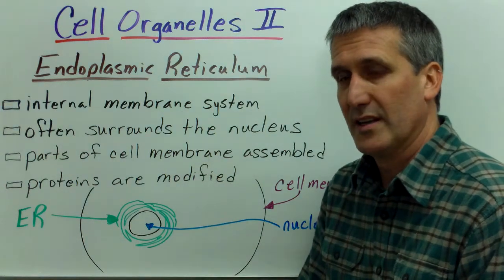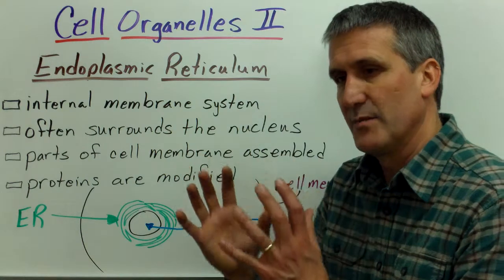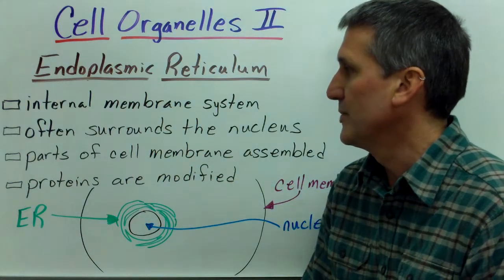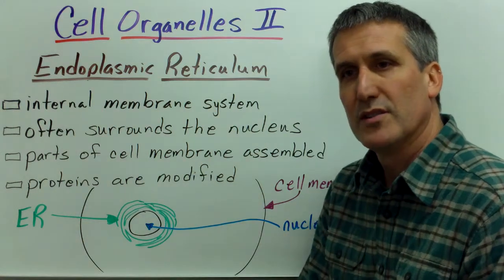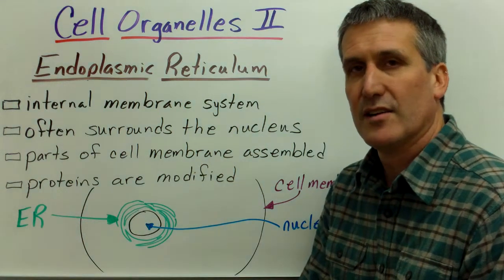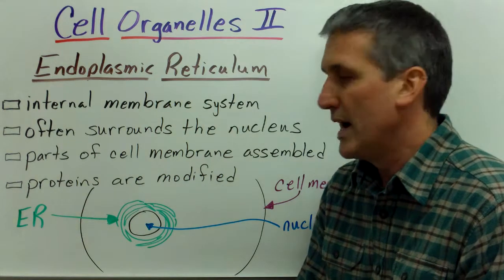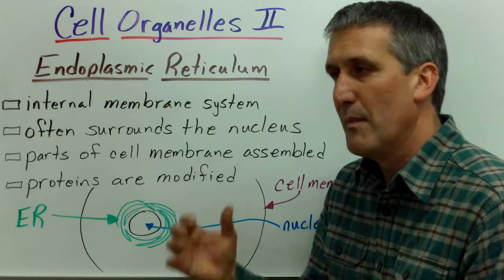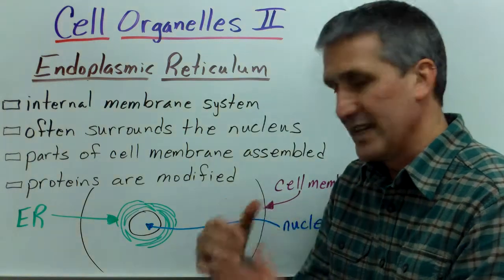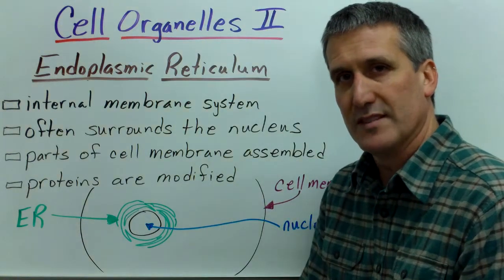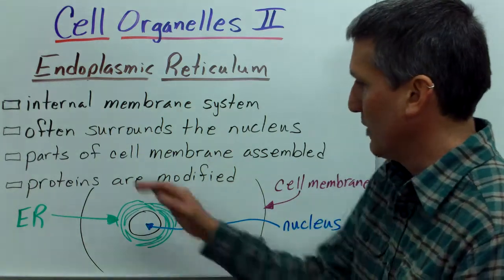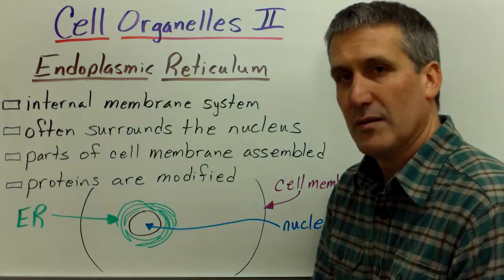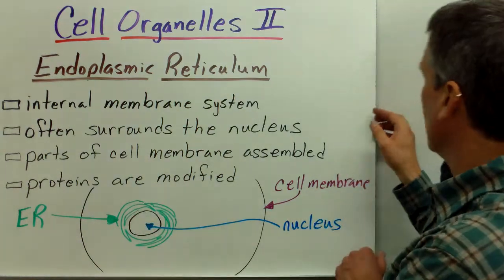We're going to start with the endoplasmic reticulum, which is a system of membranes often closely associated with the nucleus of a cell. Parts of cell membranes are synthesized here, proteins are synthesized and modified here. It's basically a membrane system which modifies and partitions off parts of the cytoplasm for specific metabolic reactions. I have a quick drawing here with the nucleus and then the endoplasmic reticulum membrane system all around the nucleus.